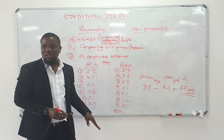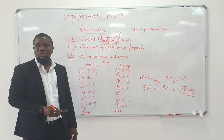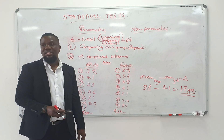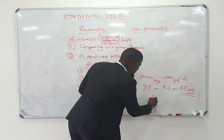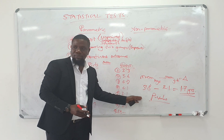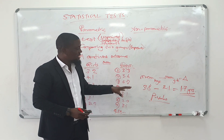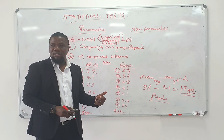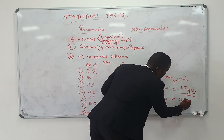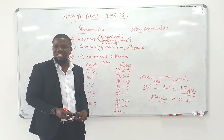Once this has been determined, there will be a question: is this difference observed significant such that it can be attributed to the sex? What do you use to determine whether there is a significant difference? If the statistical test determines whether this difference of 1.7 is actually significant or not and gives you a p-value such as 0.01, what conclusion do you make? Is that 1.7 statistically significant or not?